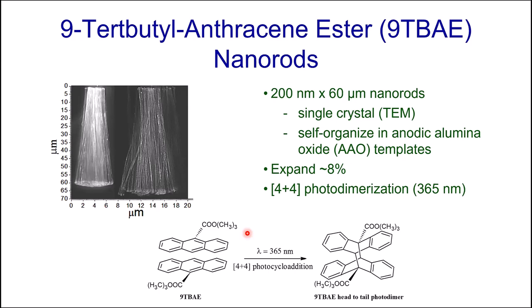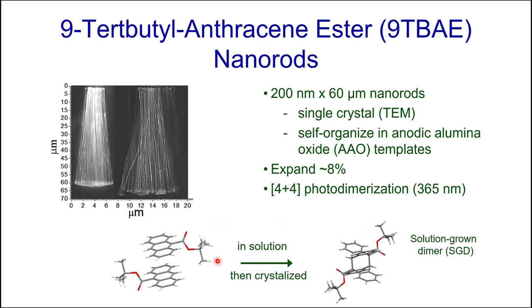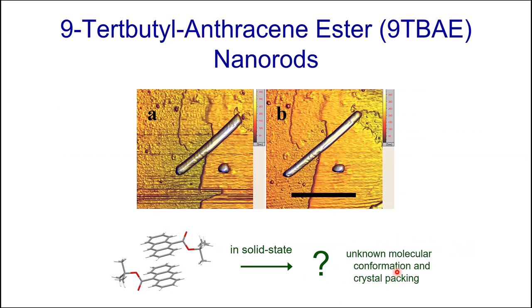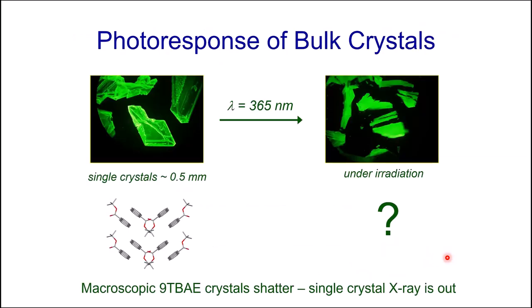When you shine light on these nanorods they expand by a remarkable eight percent. The underlying chemistry is the [4+4] photodimerization. In solution I know these tert-butyl ester groups swing out, confirmed by single crystal X-ray diffraction of the crystallized product. Unfortunately in the solid state where we see the expansions, we don't know the molecular geometry or crystal packing, because when we irradiate the single crystals they shatter — so single crystal X-ray is out.